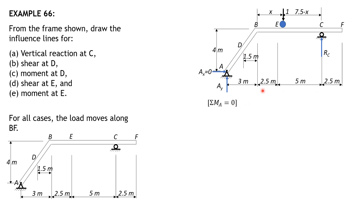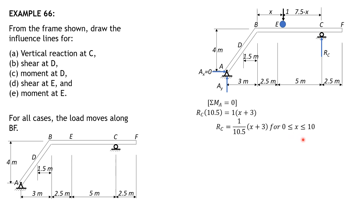So summation moment about A equals 0. R sub C times 10.5 equals 1 times X plus 3. So R sub C equals 1 over 10.5 times quantity X plus 3, for 0 ≤ X ≤ 10. Note that 2.5 plus 5 plus 2.5 is 10 meters. Then we plot the influence line for reaction at C. We begin by setting X is 0, so 0 plus 3 over 10.5, that would be 2 over 7.